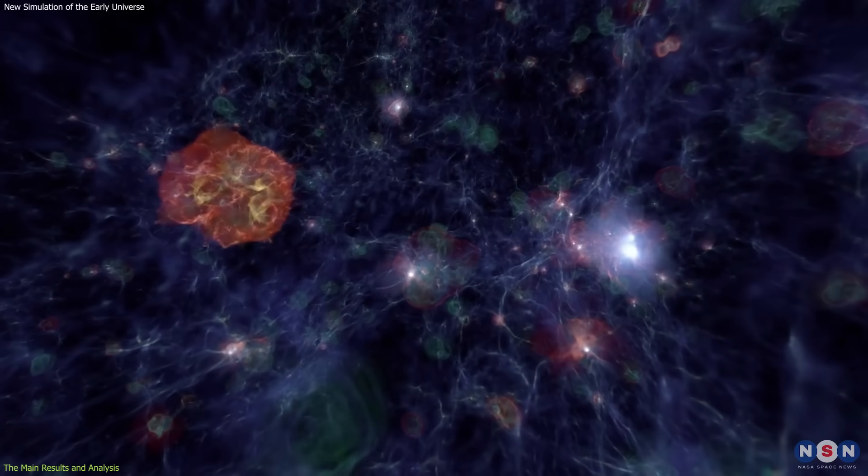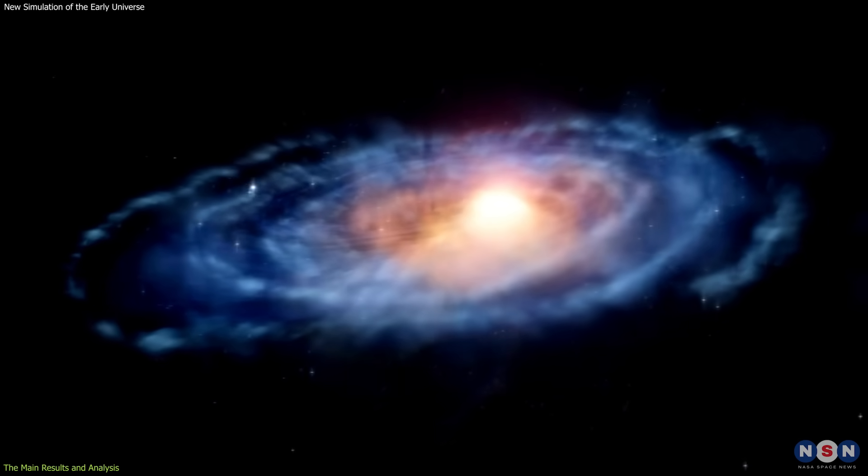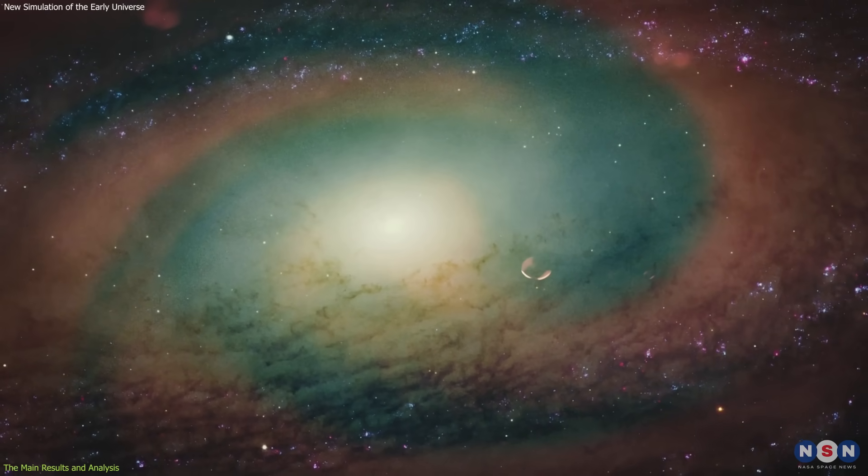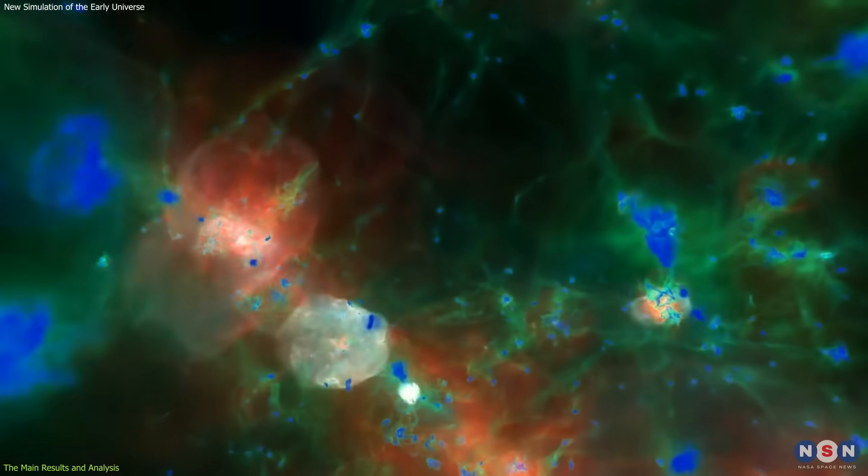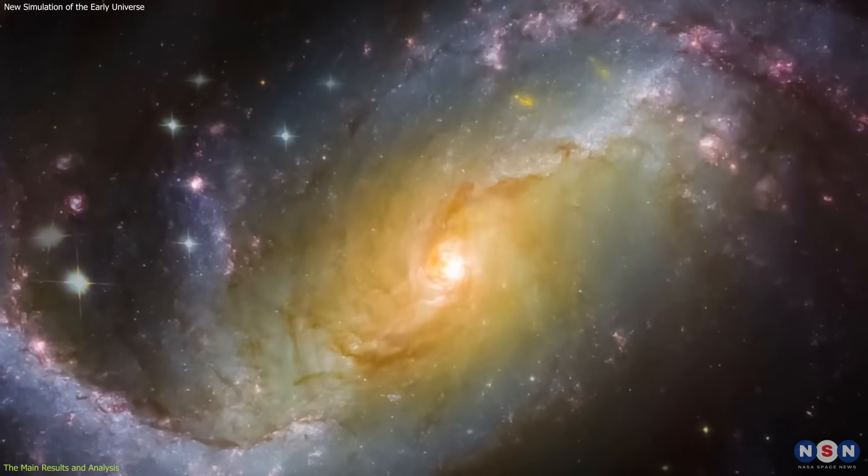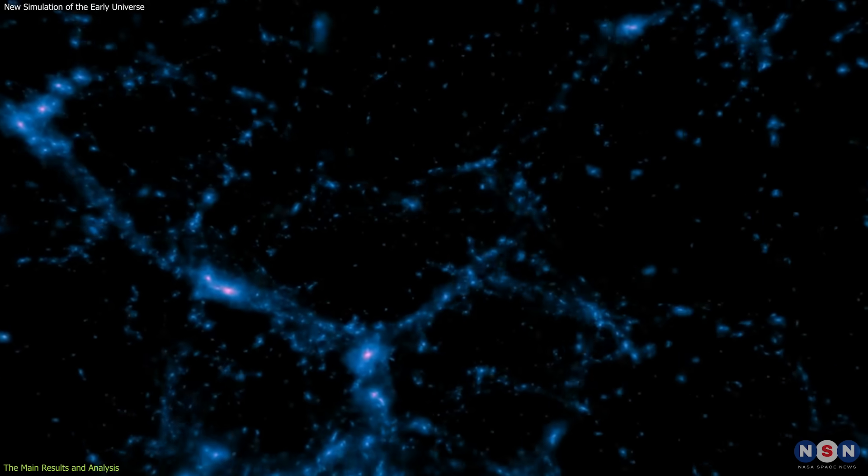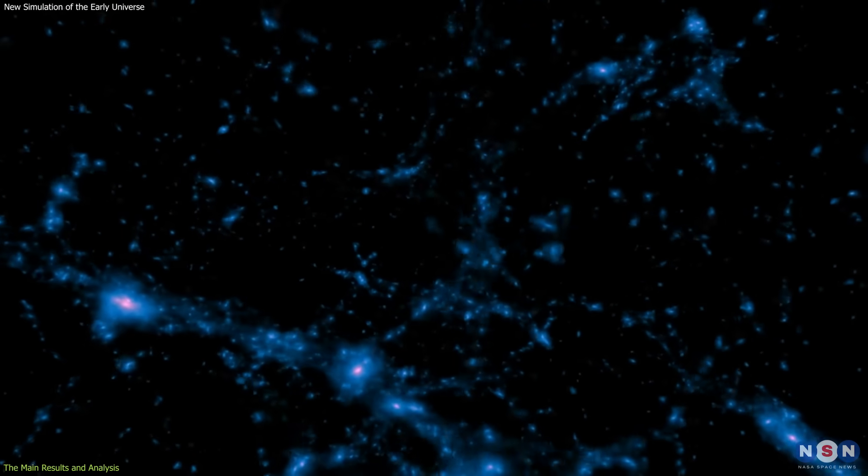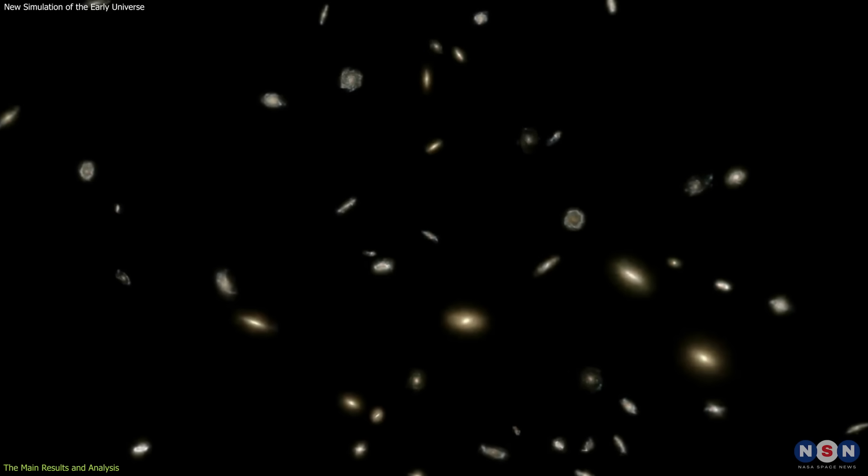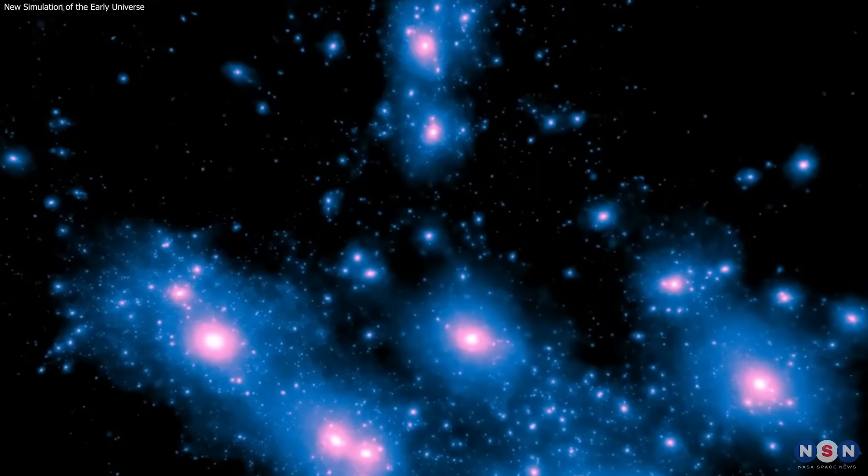The Renaissance simulations show that reionization has different effects on different types of galaxies, depending on their mass or environment. For example, reionization can suppress star formation in low-mass galaxies by heating up or evaporating their gas, but it can also enhance star formation in high-mass galaxies by increasing their gas accretion or triggering mergers. Reionization can also create a patchy or inhomogeneous ionization field, meaning that some regions of the universe are more ionized than others. This can create a diversity of galaxy properties depending on whether they are located in ionized or neutral regions.